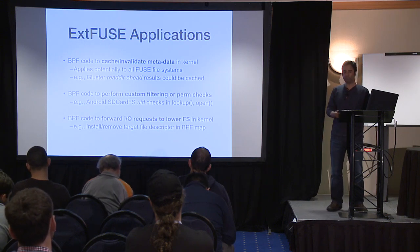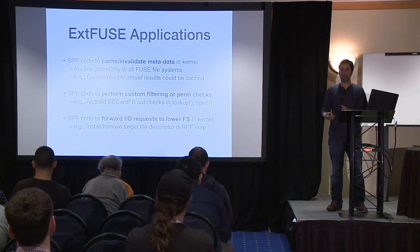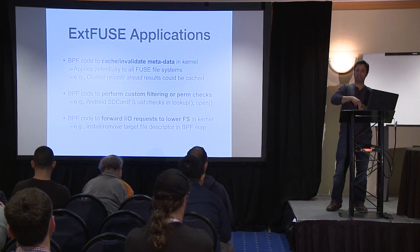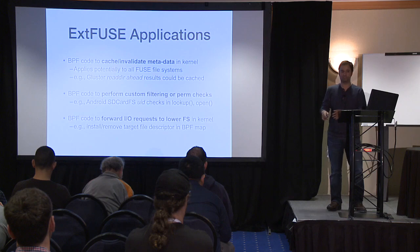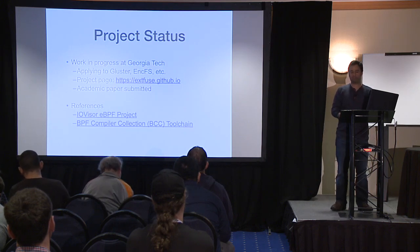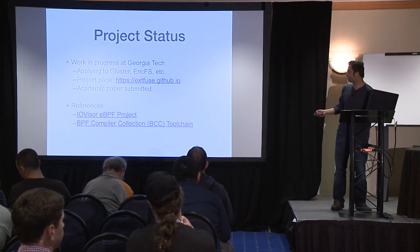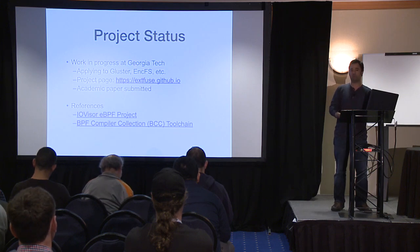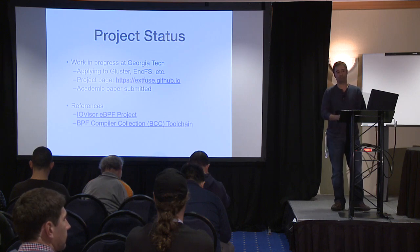This is a work in progress. I'm exploring whether BPF code can bypass the Fuse daemon entirely and directly access the lower file system for stackable file systems — for instance, once a file is opened in user space, can you install the file descriptor in the kernel safely so that future read/write requests go directly to the lower file system? We are applying ExtFUSE to Android, Gluster, and InkFS. There's a project page that I'll populate with code in the next couple of weeks. I've submitted an academic paper on this work, and I'm looking for feedback and suggestions.